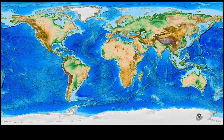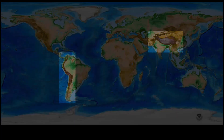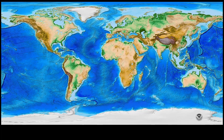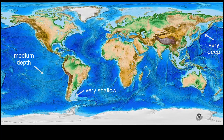We'll start with a global relief model of Earth's surface that illustrates the topography of the land and the bathymetry of the ocean basins. It lets us see the contrasting elevations of features on the continents and on the ocean floor. The darker brown colors indicate higher elevations on land. Darker shades of blue signify the deepest parts of the ocean, and lighter blue colors indicate shallow conditions.